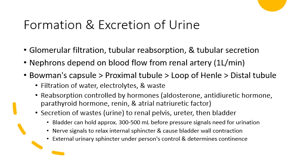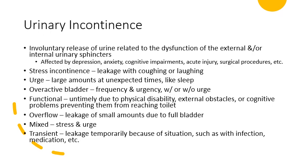You'll see issues in each area of this process — from blood supply, filtration, reabsorption, the physical process of getting down to the bladder, or the neurological signal. The first abnormal urinary problem is urinary incontinence: the involuntary release of urine related to dysfunction of the external and/or internal urinary sphincters. This can be affected by depression, anxiety, cognitive impairments, and acute injury, especially to the spinal cord or surgical procedures in the area.